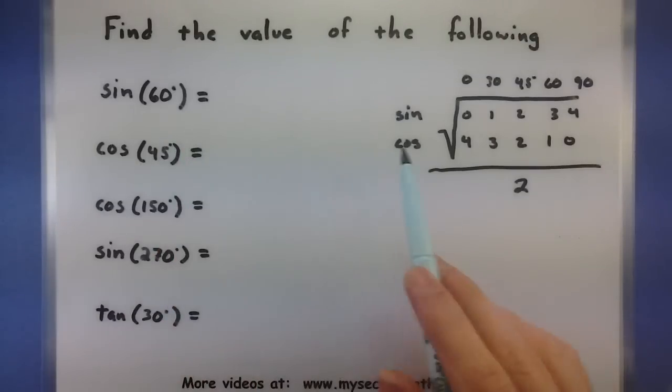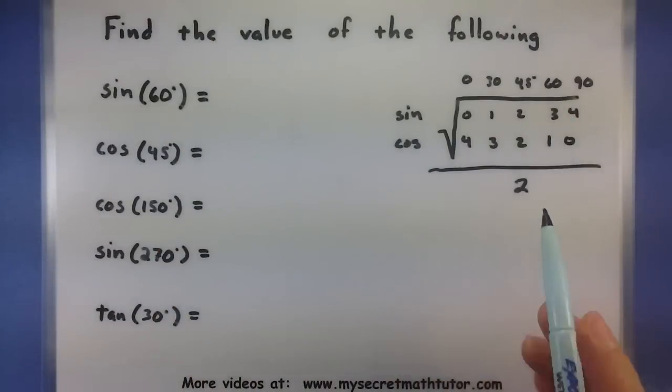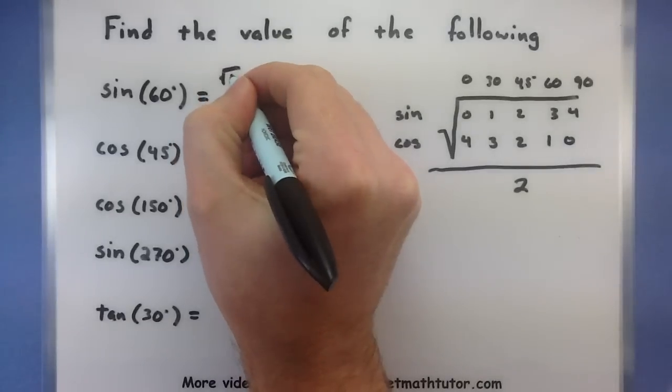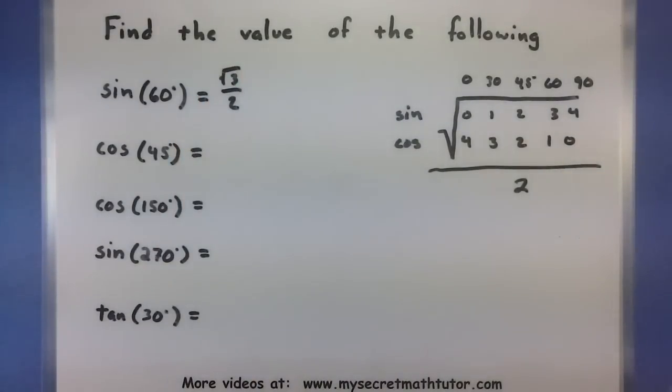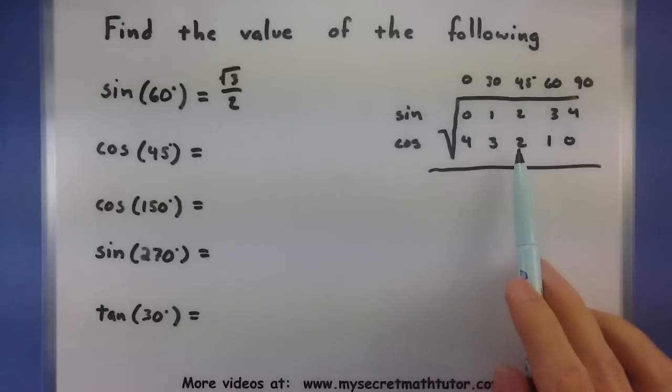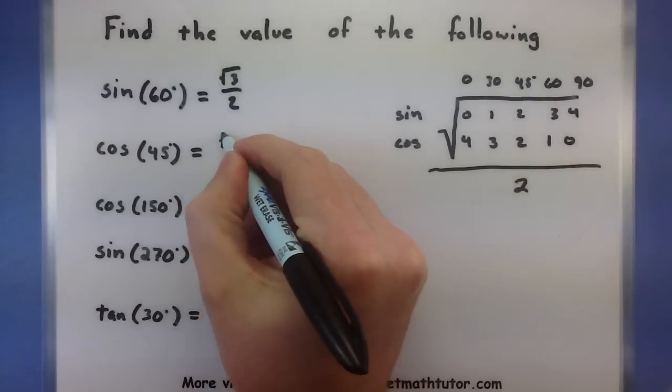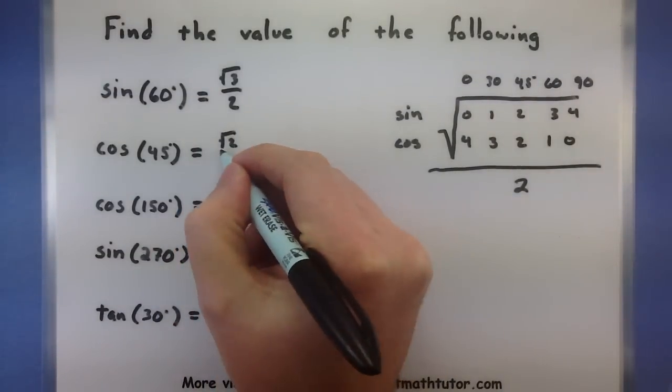Let's do the first one. Sine of 60 degrees, so I have the square root of 3 over 2. And I'm done. Cosine of 45 degrees, so I'm looking at this row, 45 degrees, so square root of 2, all over 2.